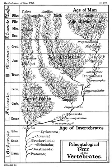Allopatric speciation begins when a population becomes geographically separated. Geological processes such as the emergence of mountain ranges, the formation of canyons, or the flooding of land bridges by changes in sea level may result in separate populations. For speciation to occur, separation must be substantial so that genetic exchange between the two populations is completely disrupted. In their separate environments, the genetically isolated groups follow their own unique evolutionary pathways. Each group will accumulate different mutations as well as be subjected to different selective pressures.